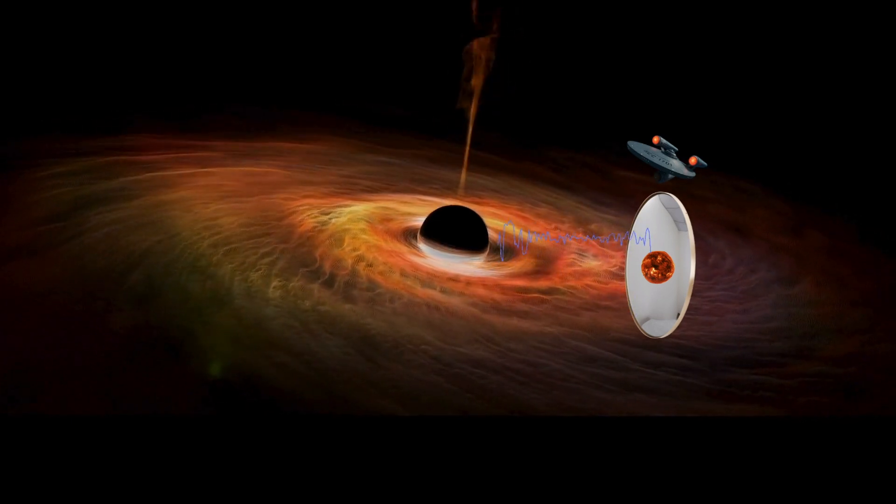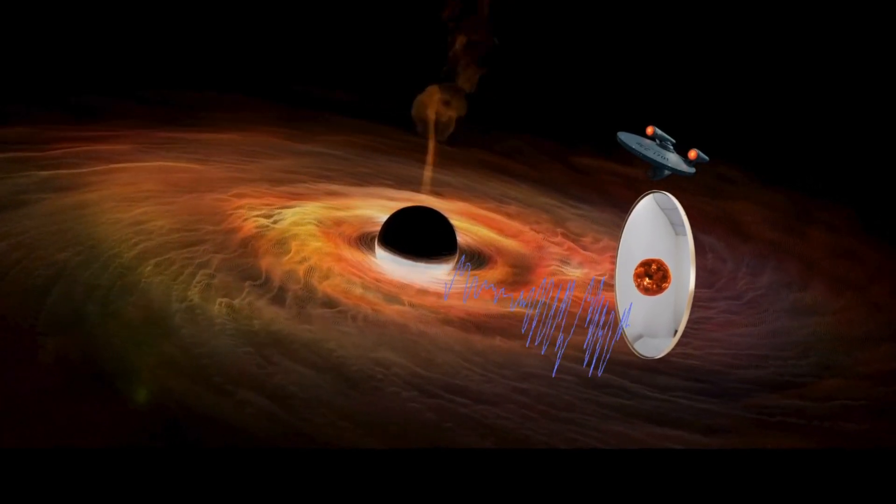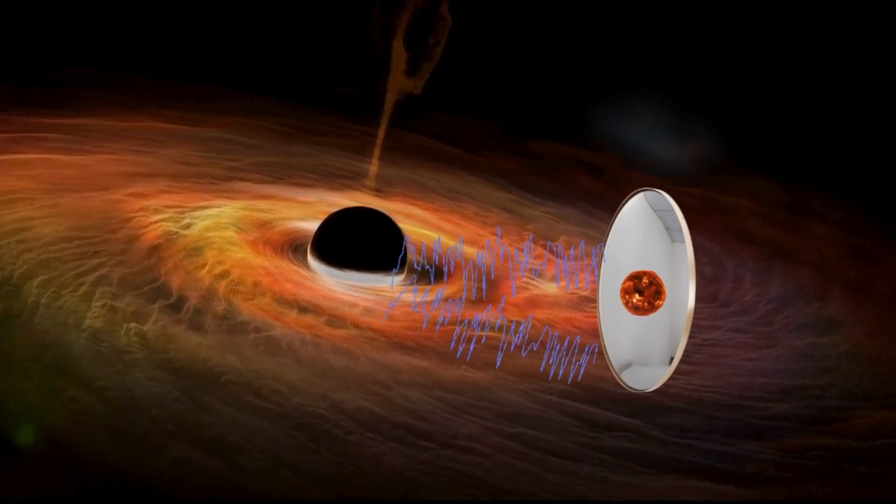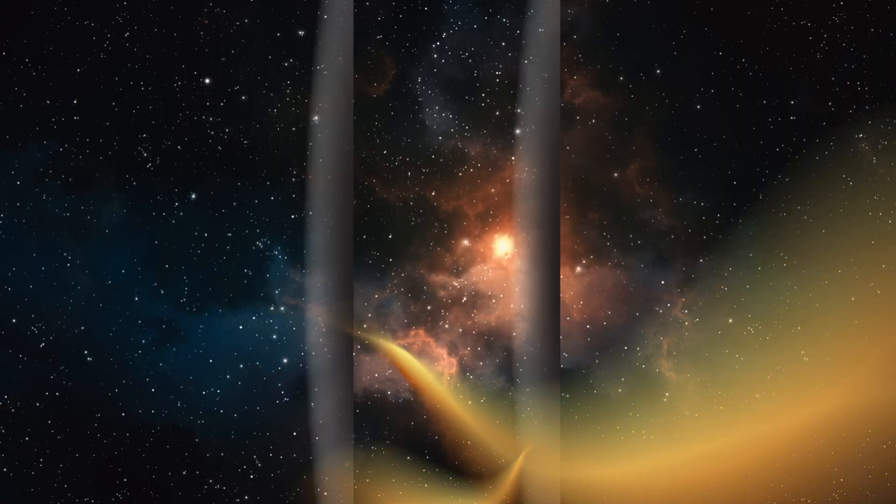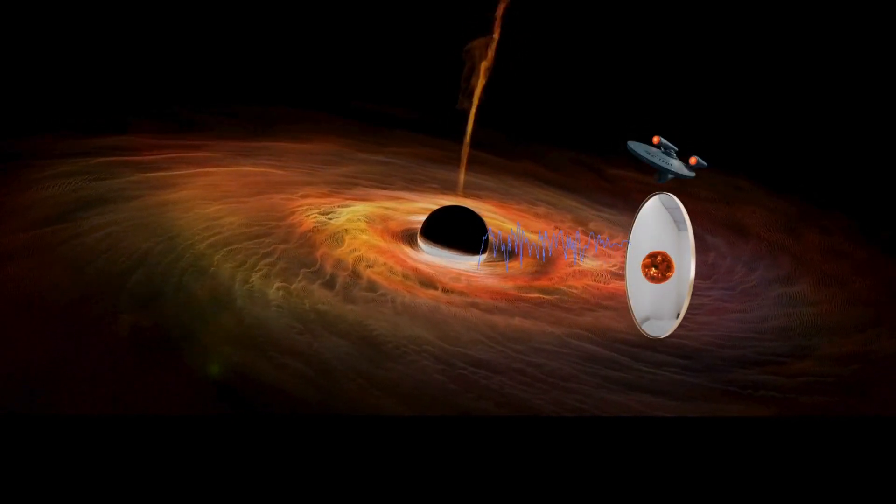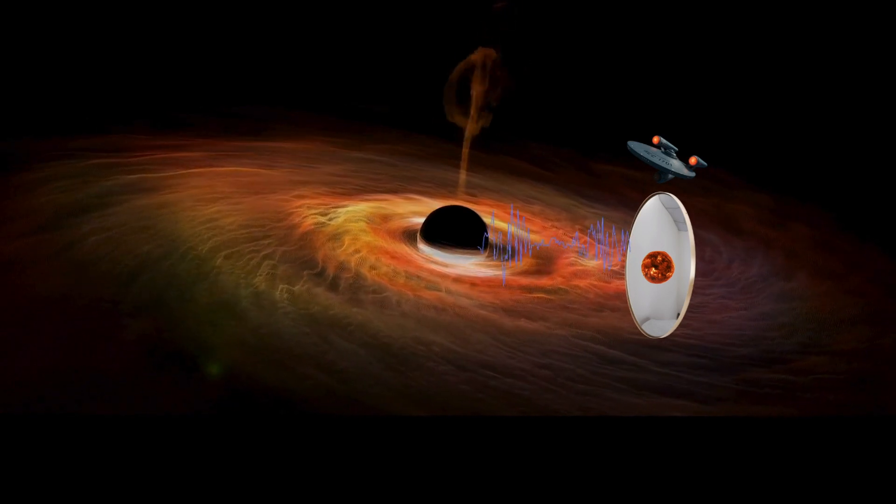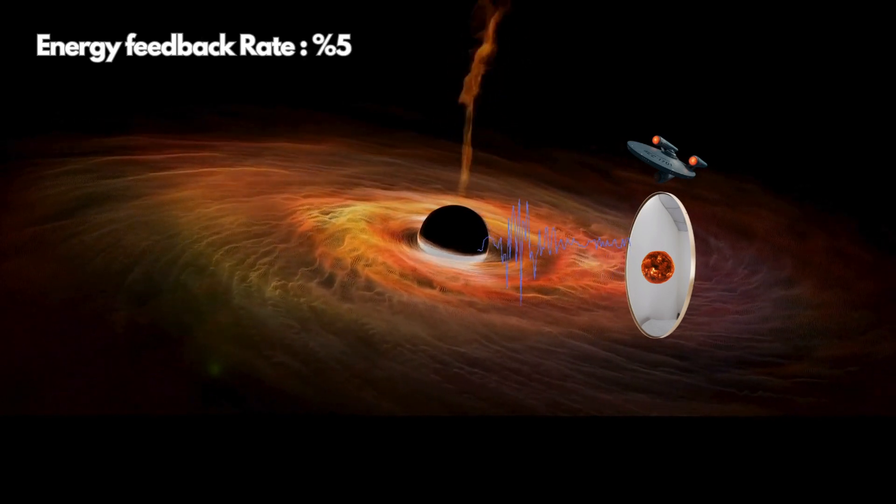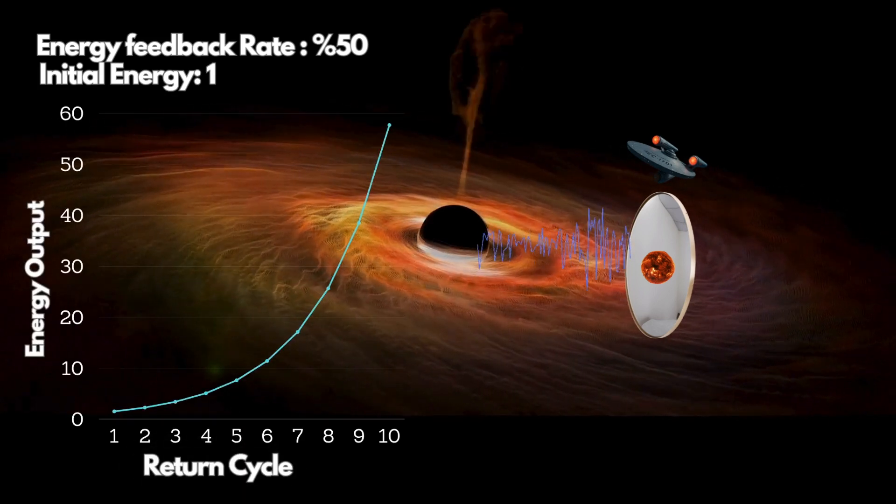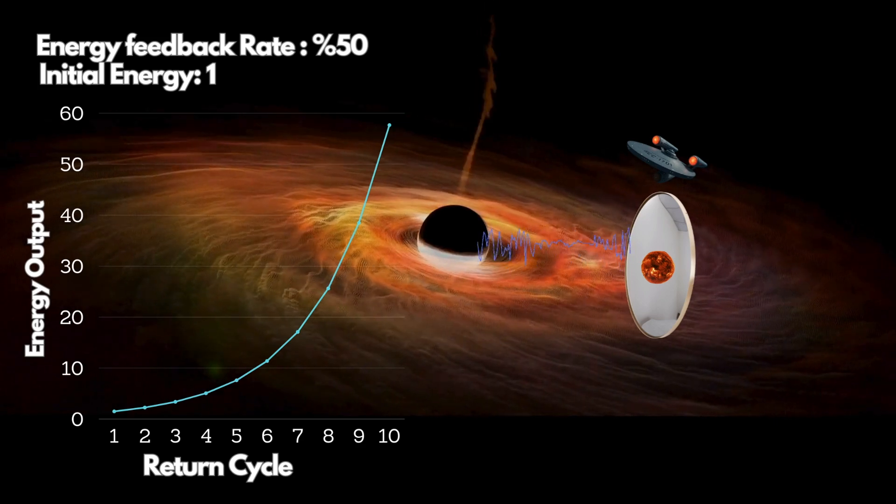Each time the cycle repeats, the wave grows stronger. This is a positive feedback loop, a system that reinforces itself by feeding on its own output. It's just like a nuclear chain reaction. Once power is triggered, it grows exponentially. So how much energy can a black hole bomb actually produce? Some theories suggest the energy could double with every cycle, a full 100% increase each time. But let's stay conservative. Let's assume just 50% feedback. So we begin with one single unit of energy, and we let it cycle again and again. By the 10th return, we've reached 57 times the energy we started with. That's the power of exponential feedback.